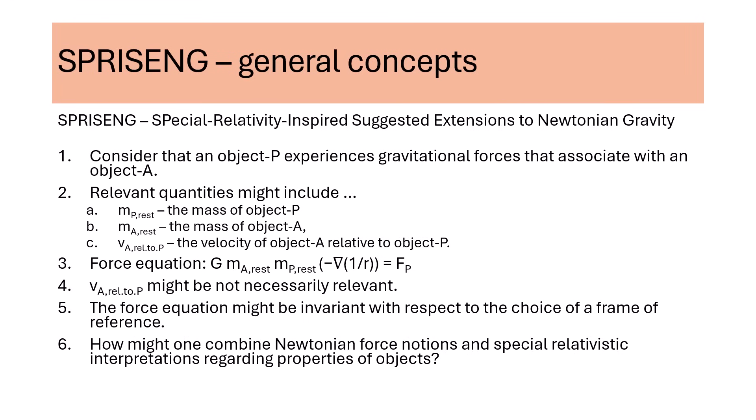'Surprising' denotes special relativity-inspired suggested extensions to Newtonian gravity. We consider that an object P experiences gravitational forces that associate with an object A. For Newtonian gravity, relevant quantities might include the mass of object P, the mass of object A, and perhaps the velocity of object A relative to object P. While popular modeling can consider that object P orbits object A, the velocity of one object relative to the other does not appear in the formula for calculating Newtonian gravity forces. The force equation might be invariant with respect to the choice of a frame of reference.